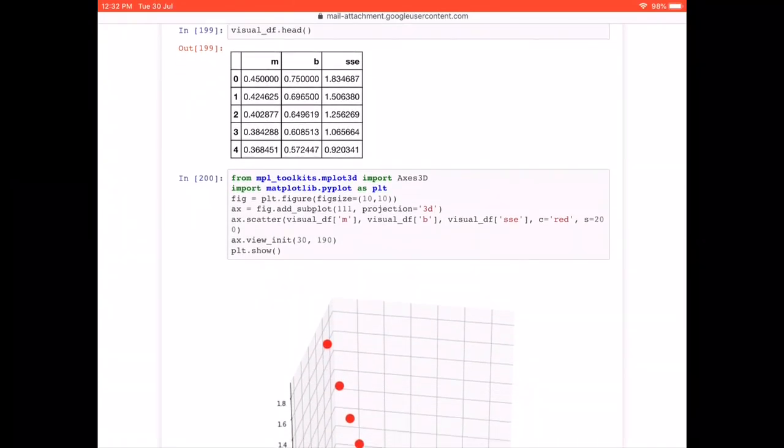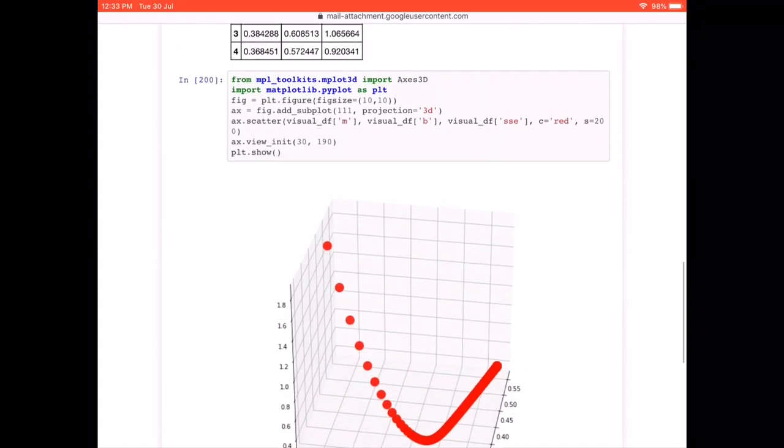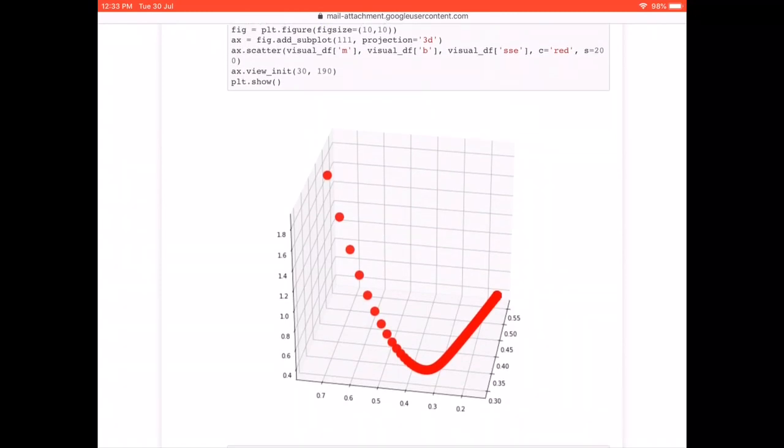Now, once we have these values m, b, and don't worry about this matplotlib code at this point of time, because eventually we are going to cover all these things in our future projects. Right now, just simply see that we are just importing the matplotlib pyplot and the xs3d library just to plot a scatterplot here. And if you can see here, my gradient descent gradually decreased and decreased. And finally, there was a point when it just went to almost to 0.